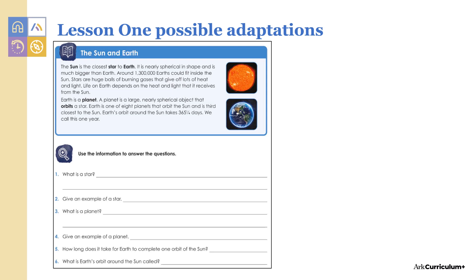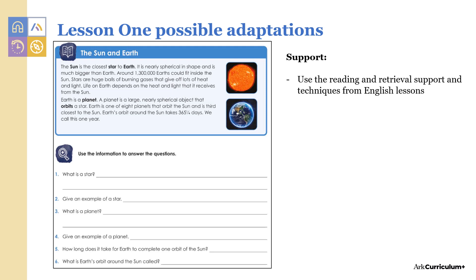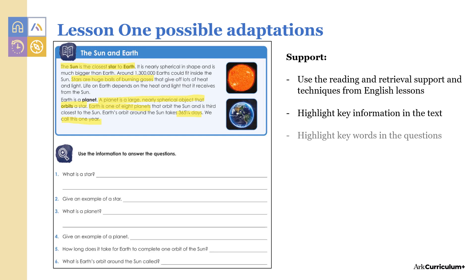In this activity pupils need to use the reading text to answer the retrieval questions below. Any adaptations you use in your reading lessons could definitely be used here and for any retrieval activities from text. Here you could highlight the key words in the text and also in the questions. If you need to give a high level of support, you could print off the answers as labels for pupils to read, sort through and stick as the correct answer.